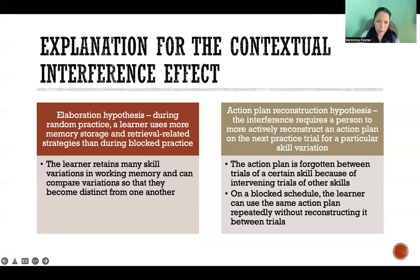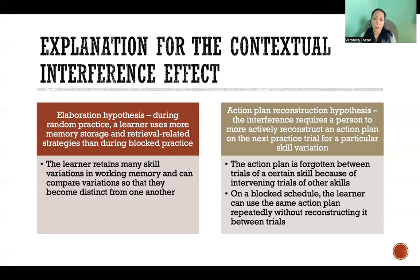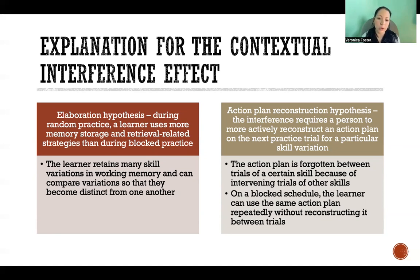Why does contextual interference lead to more learning? There are two main hypotheses, and both are likely true. The first is the elaboration hypothesis, which says that during random practice, a learner uses more memory storage and retrieval-related strategies than during block practice. The learner retains many skill variations in working memory and can compare those variations so they become distinct from one another.